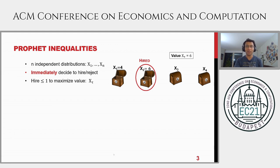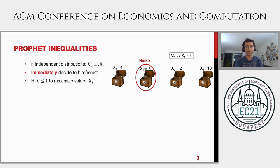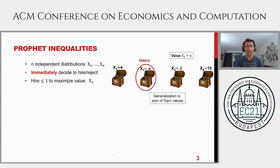For example, you see X1 equals 4 and decide not to hire; you see X2 equals 6 and decide to hire, so the algorithm stops at X2 equals 6 with reward 6. Had it continued, maybe X4 was 10, but it cannot go back — the decision is irrevocable. The goal is to maximize the value. This is the classical prophet inequality problem. You can study generalizations like top-R hiring, but let's focus on R equals 1, the single-item prophet inequality.